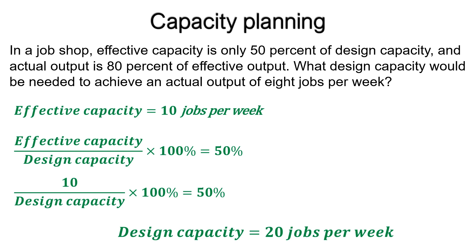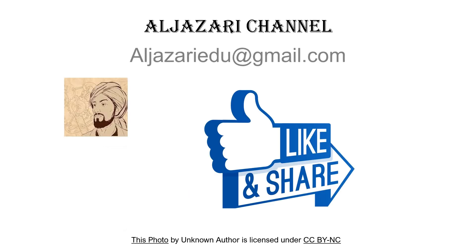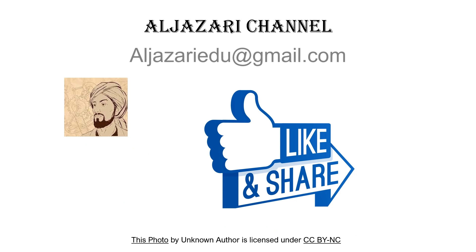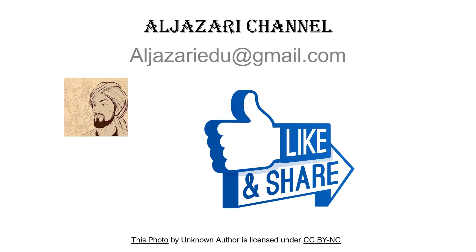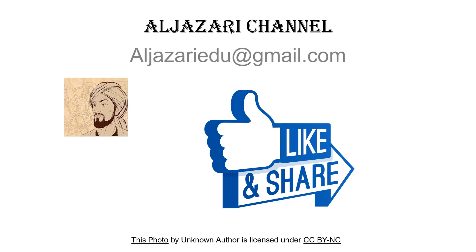So, to achieve 8 jobs per week, a design capacity of 20 jobs per week is required. In this video, the efficiency and the utilization of a system are explained by solving an example and two problems.